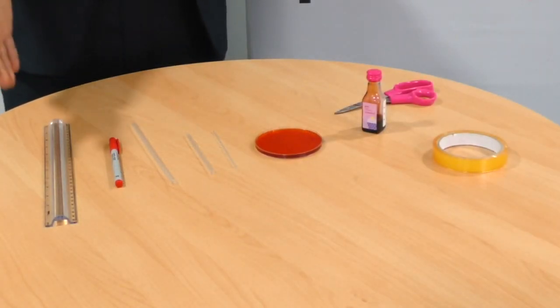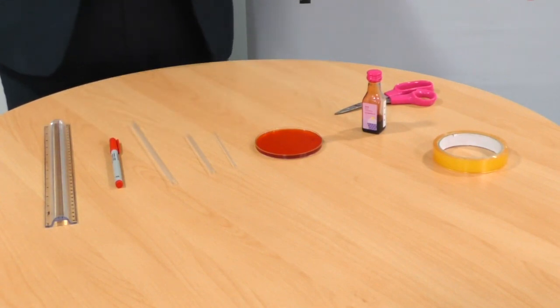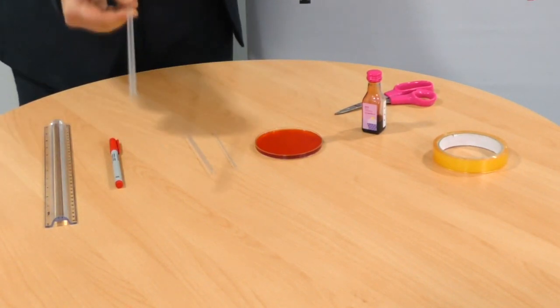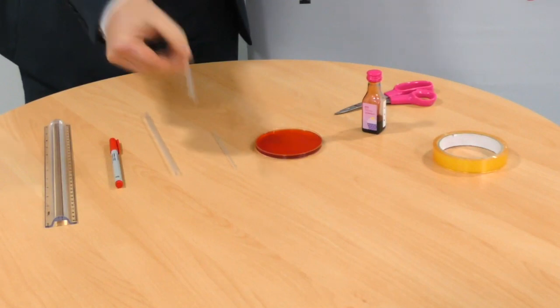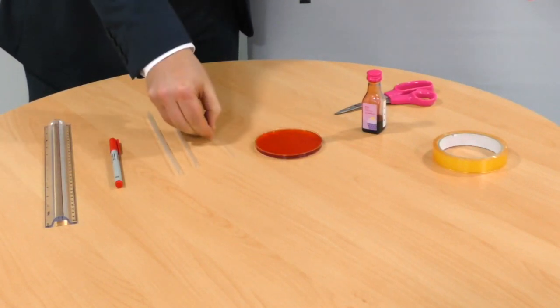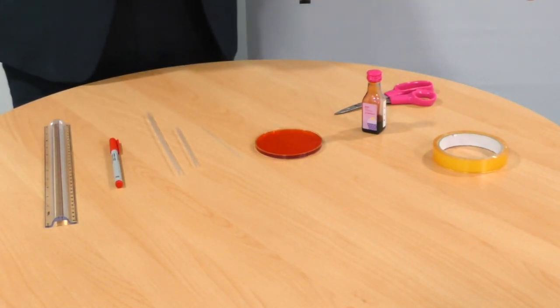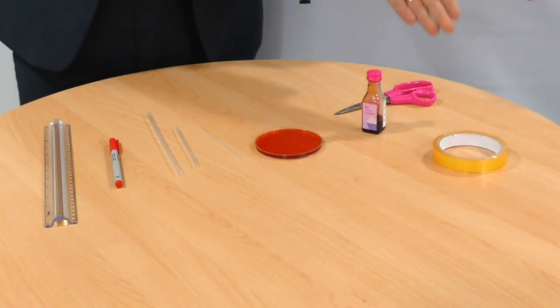For this activity you will need a ruler for measuring, a pen for marking, three straws - one large, one medium and one small - a petri dish filled with water with a few drops of food coloring, some sellotape and some scissors.